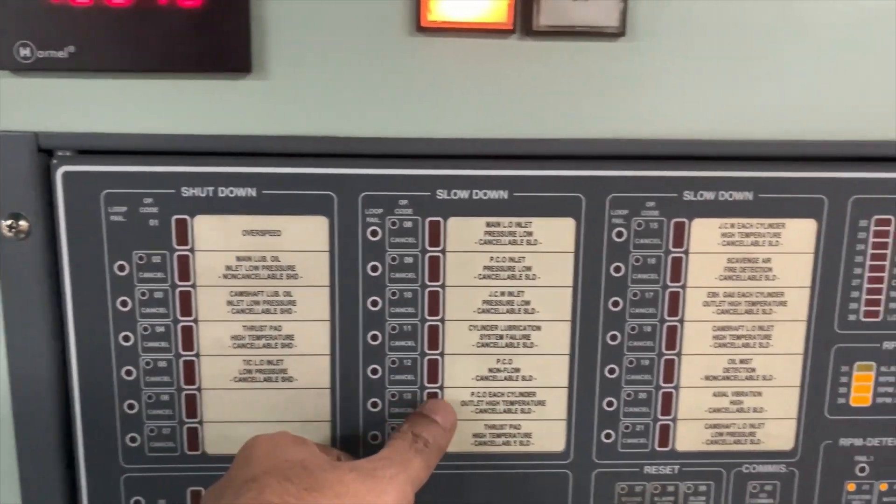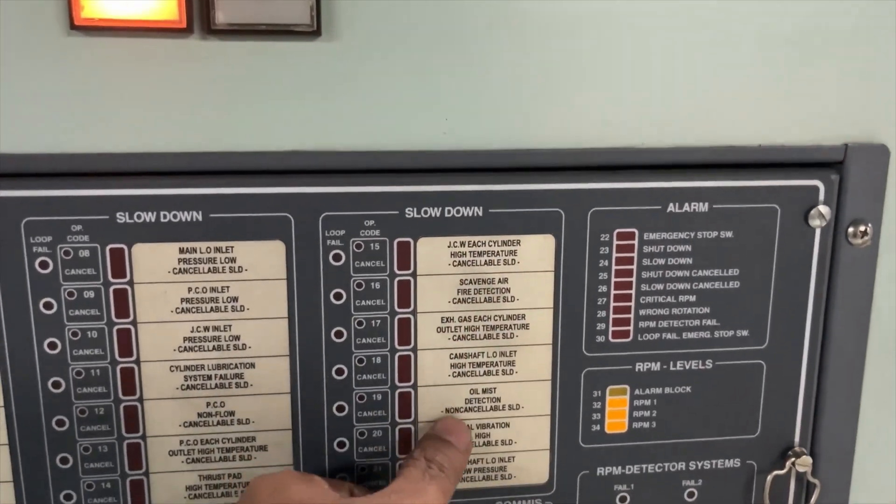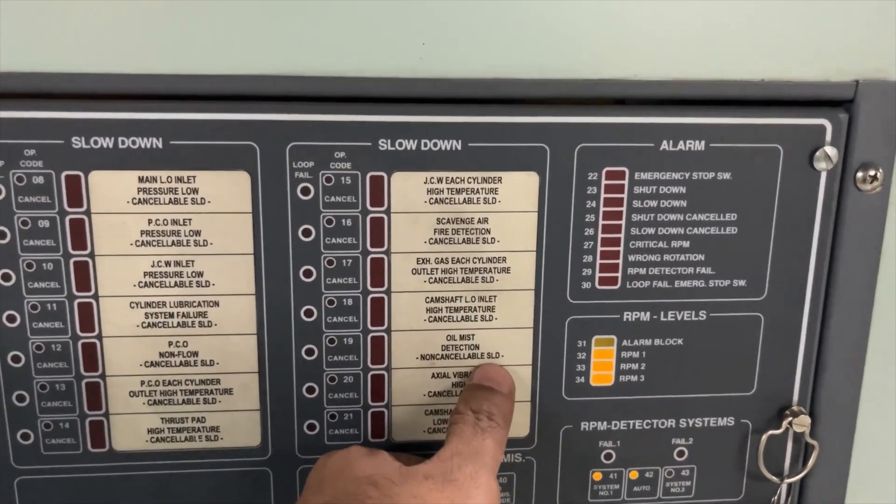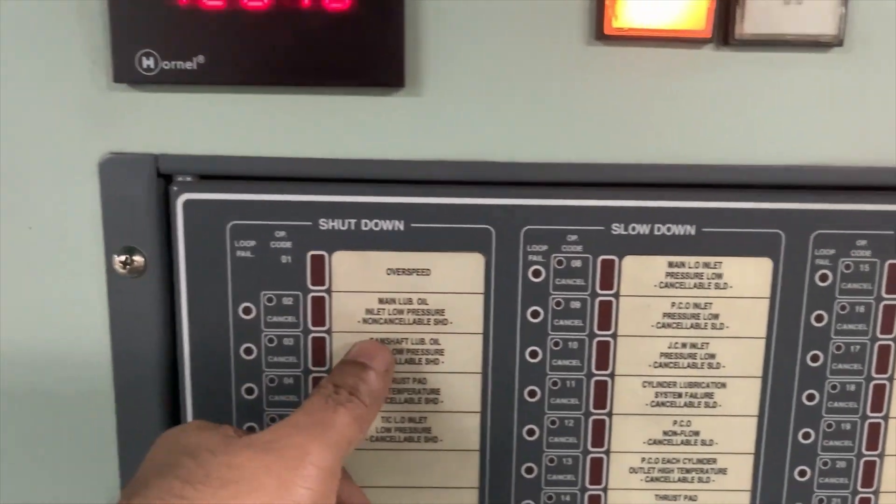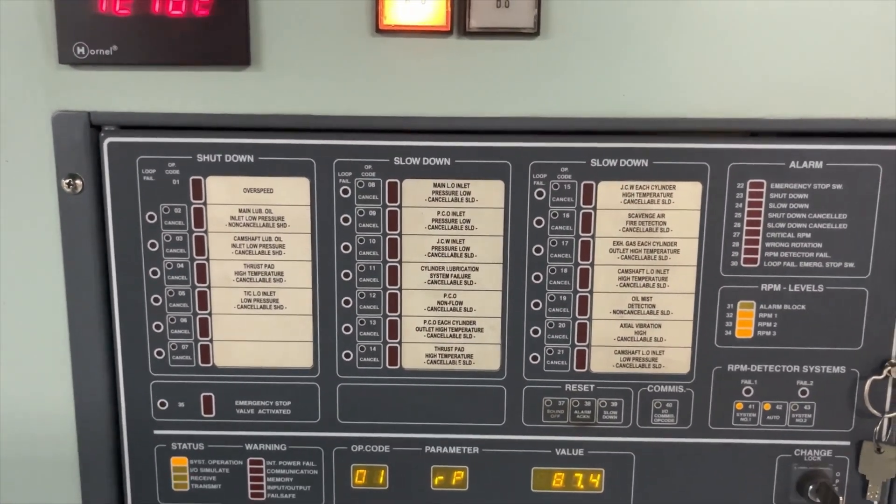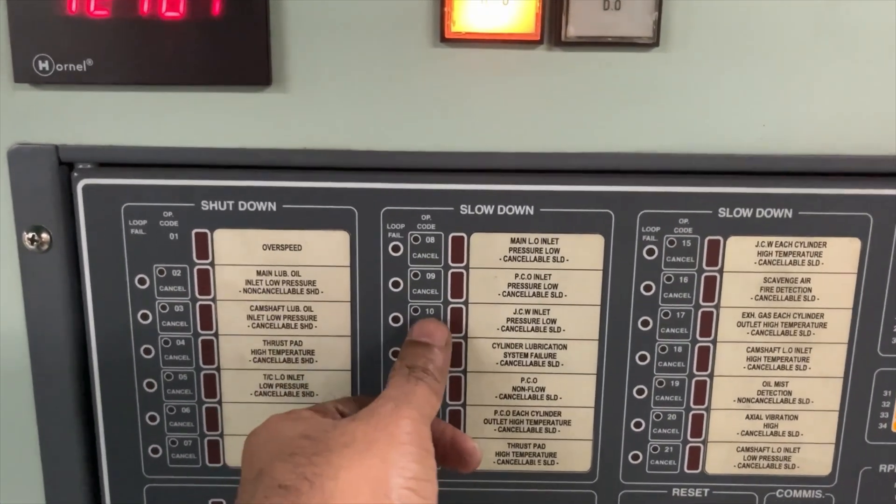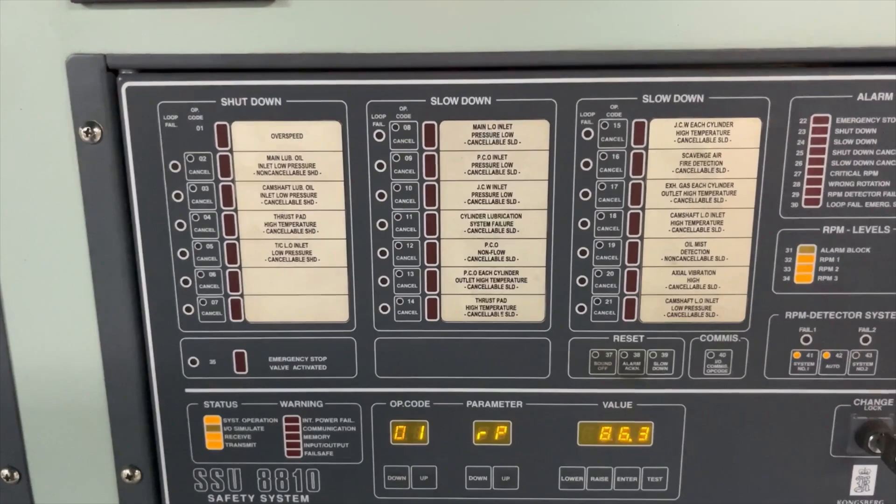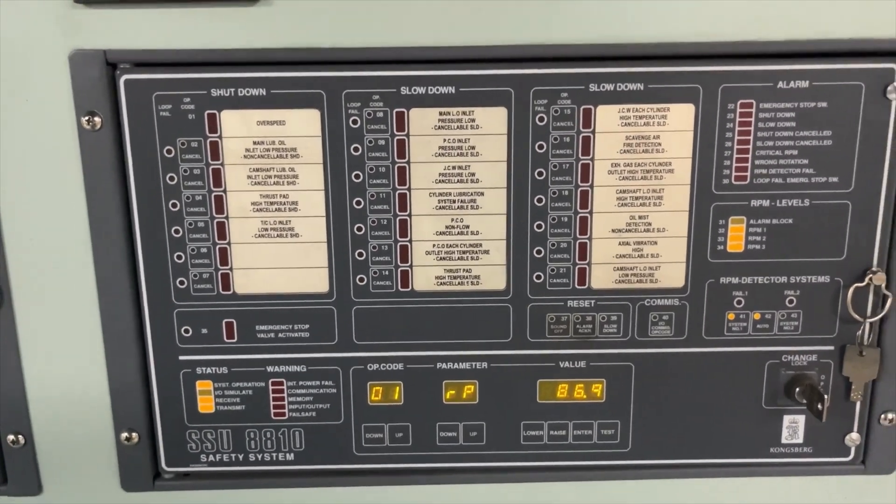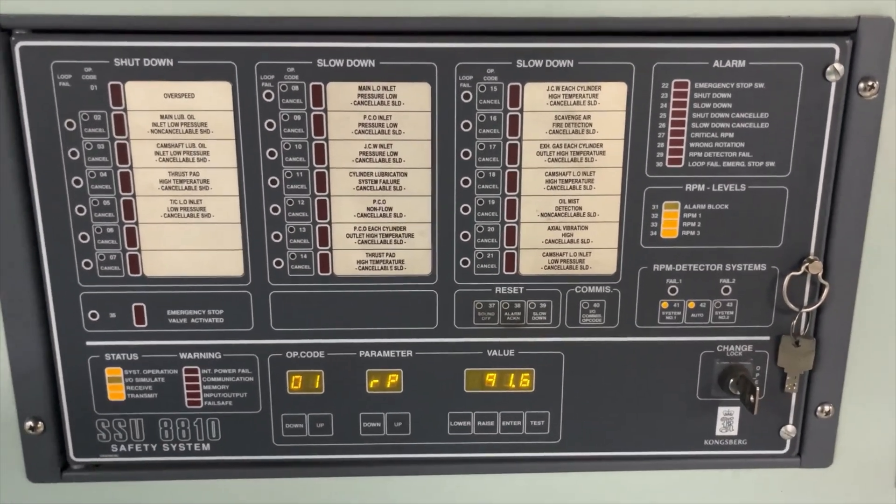These alarms you can cancel. But these few alarms, this is oil mist non-cancellable. And main engine lube oil inlet pressure, this is non-cancellable. Other alarms, you can press this cancel button and cancel them and you can run the main engine. But once these alarms are activated, you will not be able to run it.